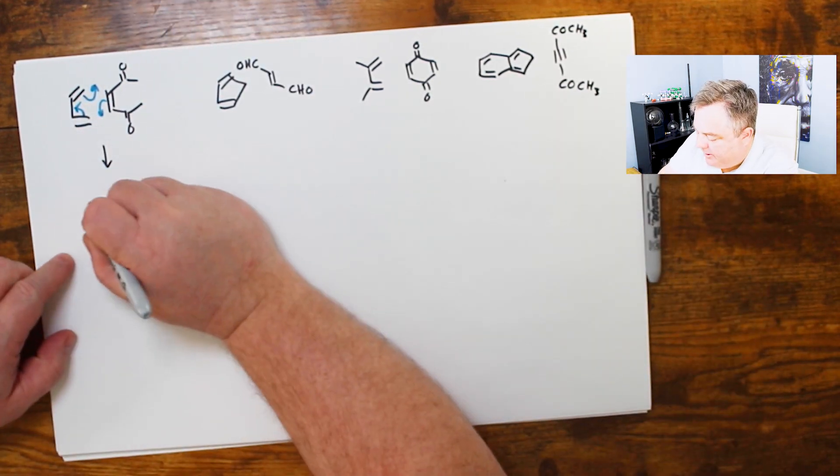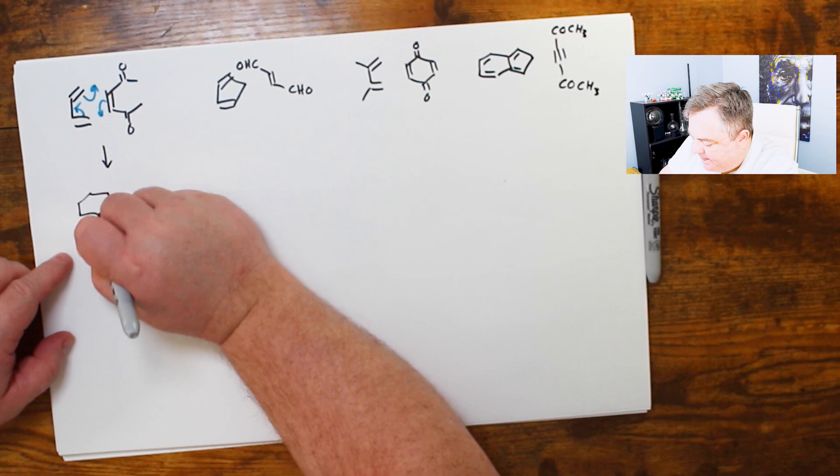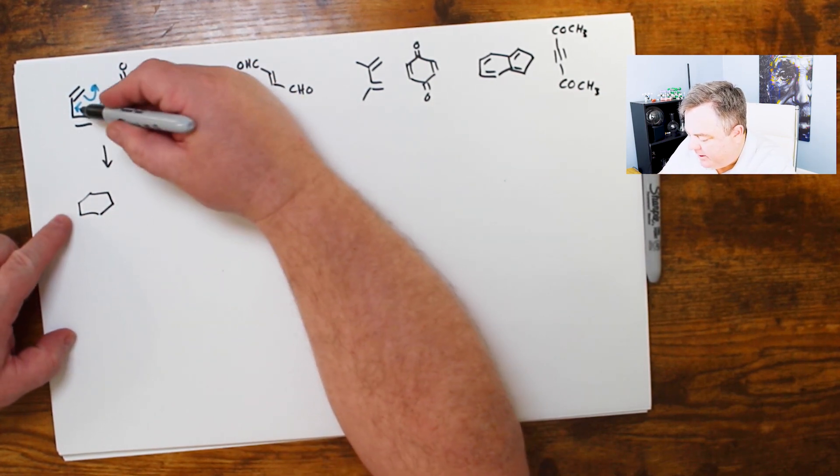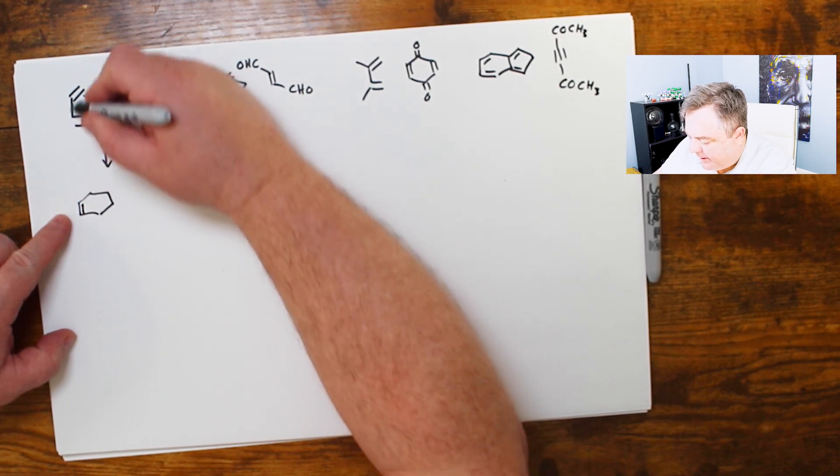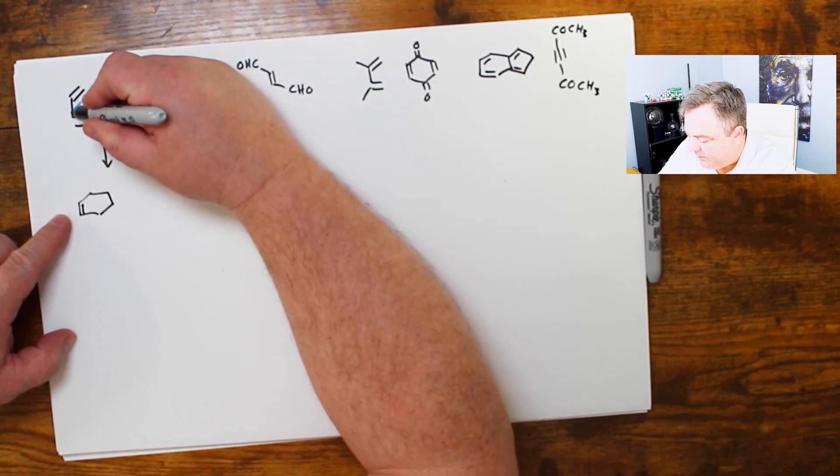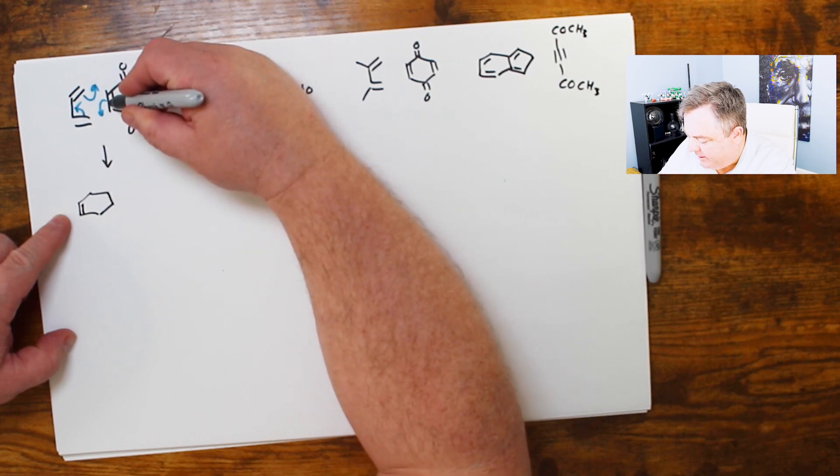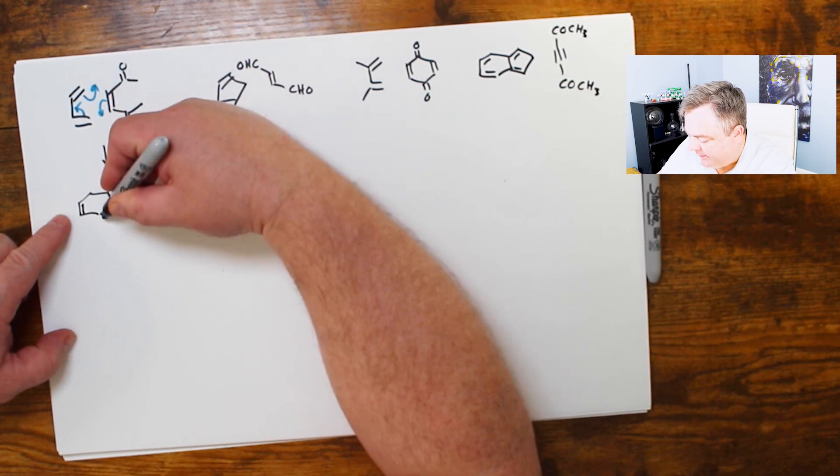And we can draw what the product would be. So I made a six-membered ring. I made a bond here and here. This double bond is right here. So this double becomes a single, this single becomes a double, that double becomes a single. Make this bond. This double becomes a single, and make this bond.